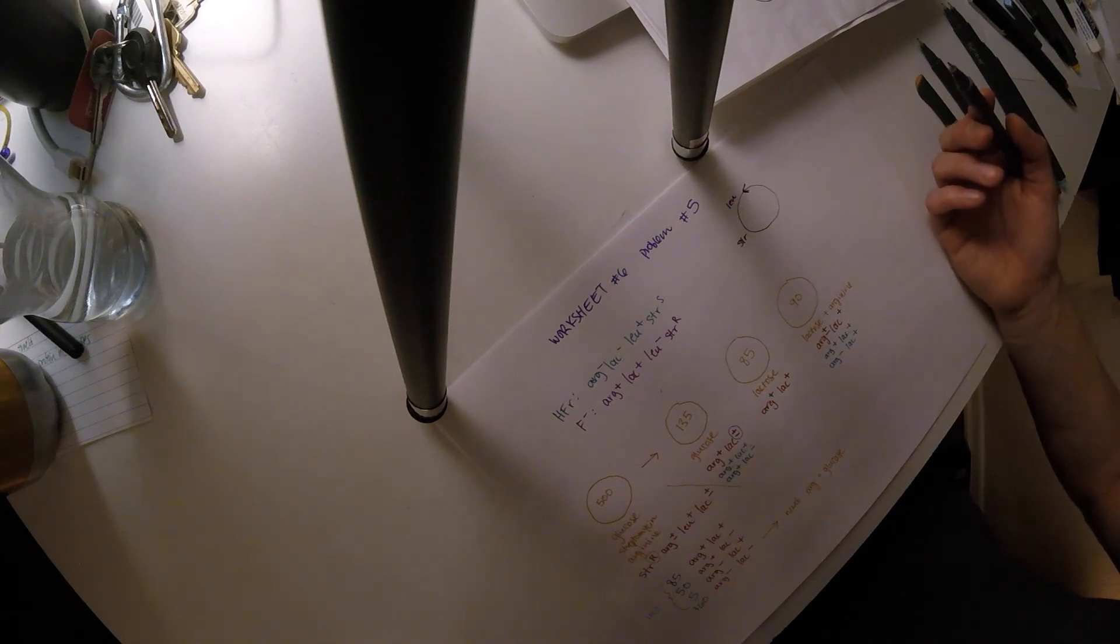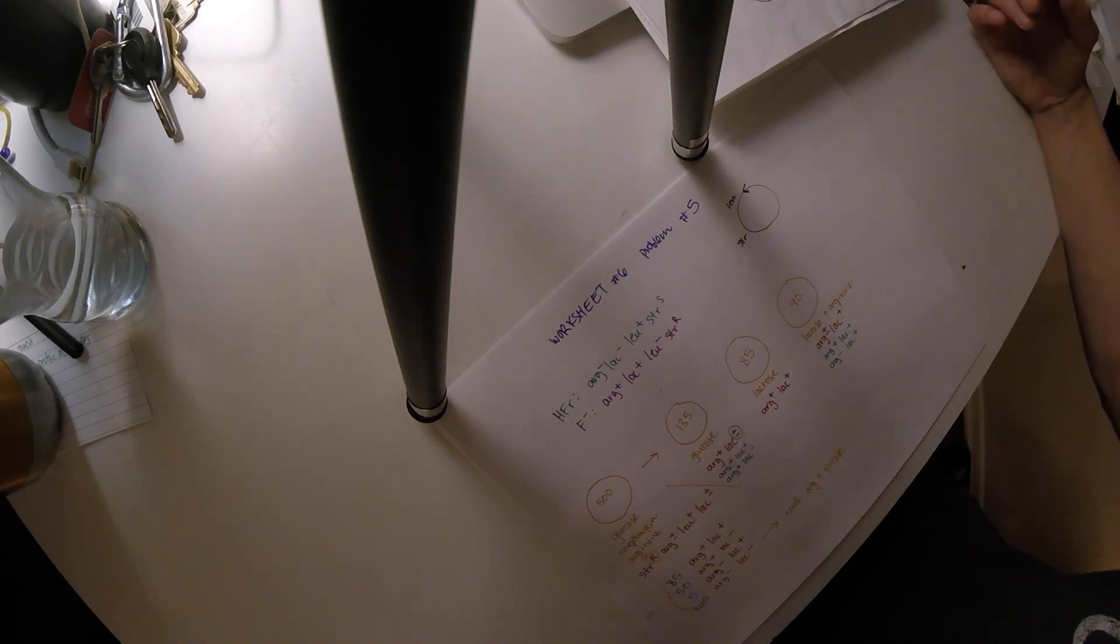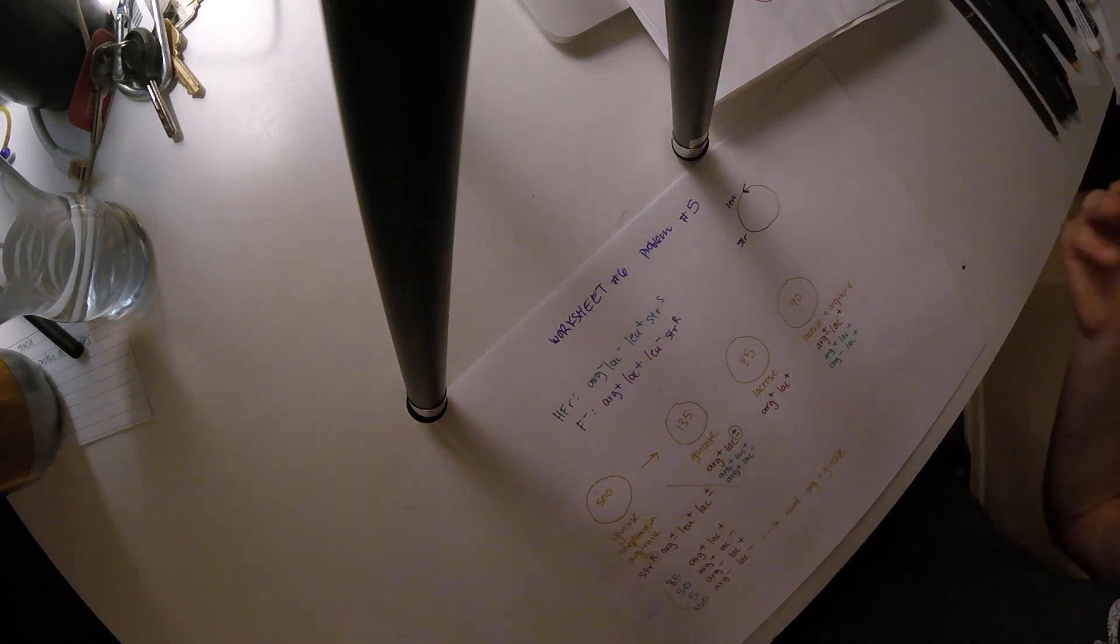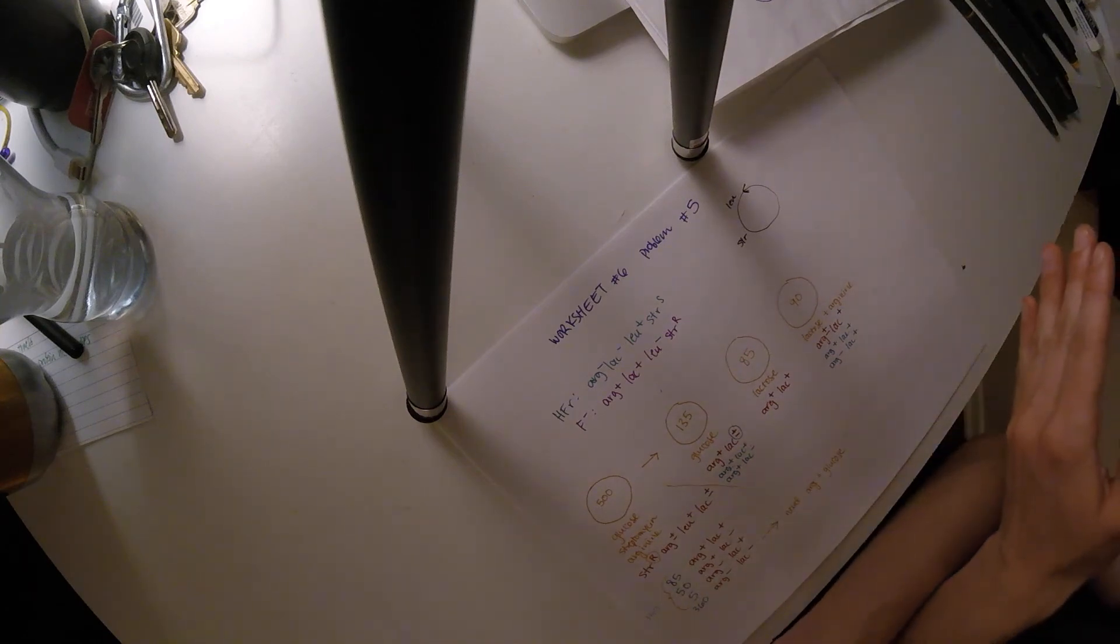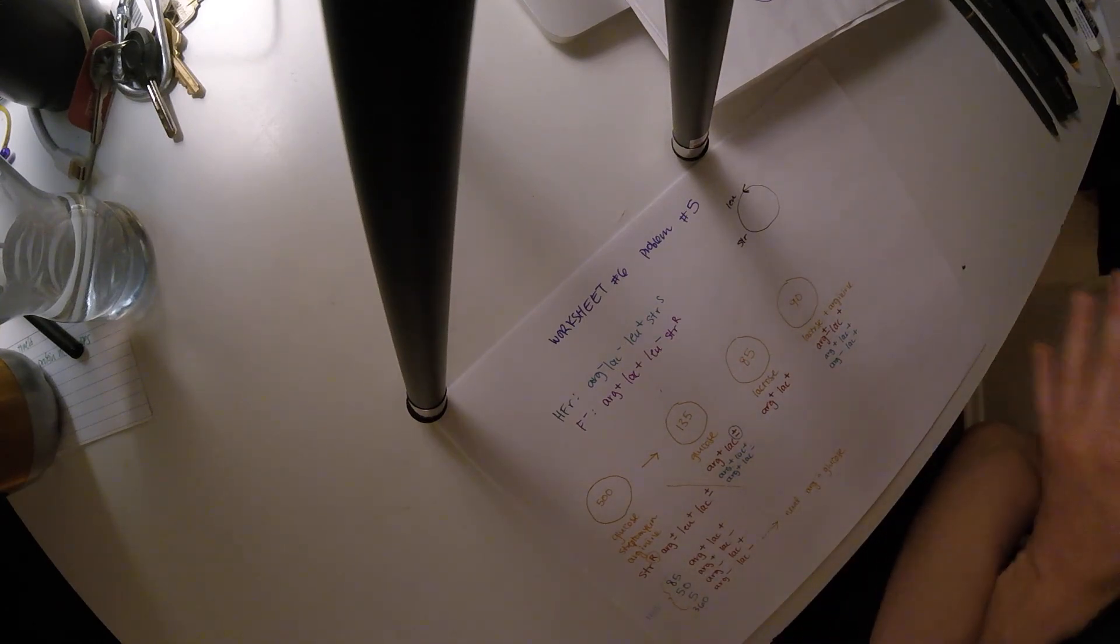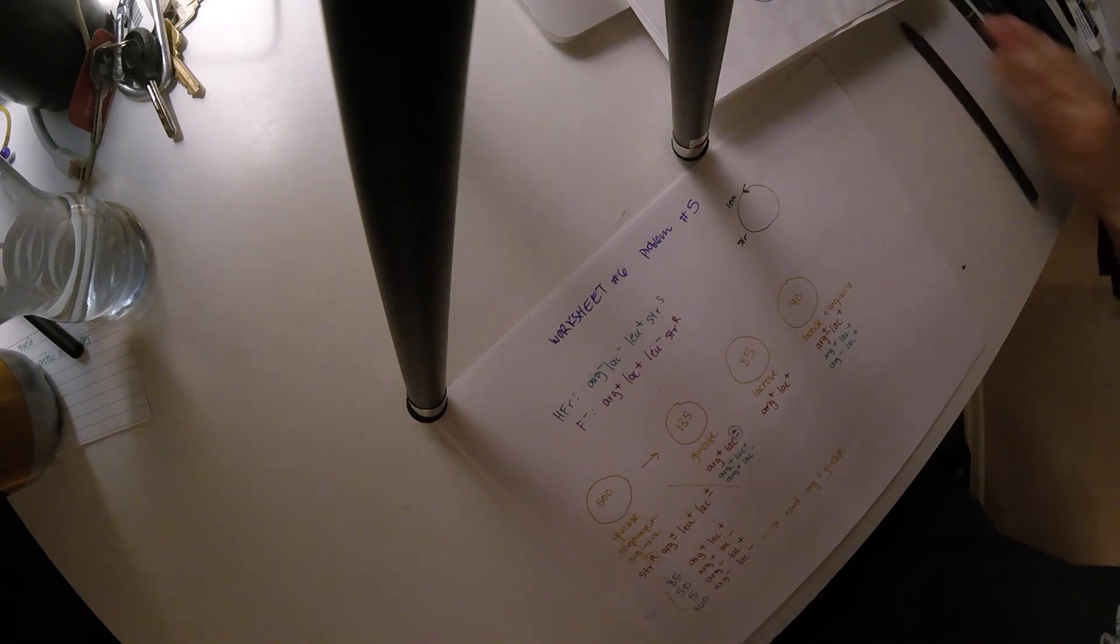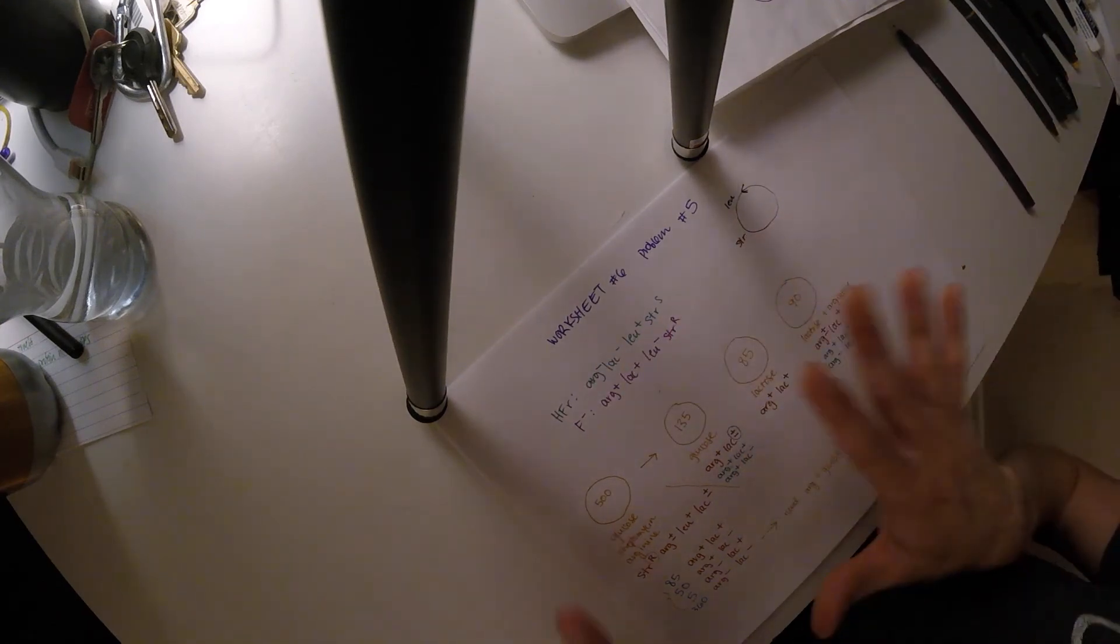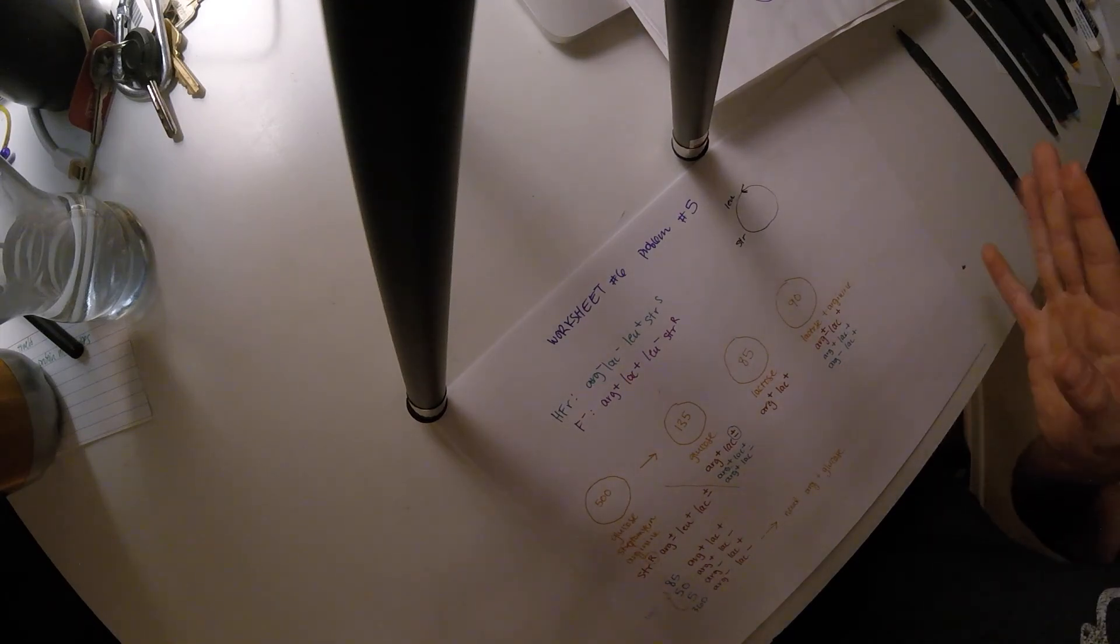For part B, I'll take you through one part of it, where we have to find the recombination frequencies. So, what we did before, when we were talking about crossovers in chromosomes, we drew out the parentals, and we saw how they would cross, and what would lead to recombinance. And that's what we're going to do here, too. We're going to draw out the F minus, and draw out the HFR.